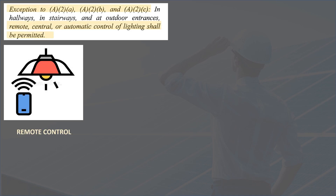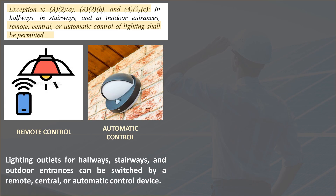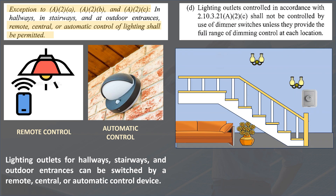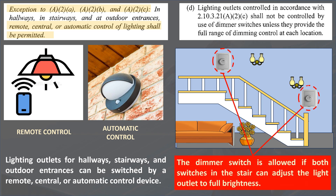As stated in the exception, a remote, central, or automatic control device can switch lighting outlets for hallways, stairways, and outdoor entrances. For interior stairways, a dimmer switch is allowed if both switches on the stair can adjust the lighting outlet to full brightness. This requirement avoids a condition where brightness is set to the lowest illumination at one end of the stairs and cannot be adjusted at the other end.